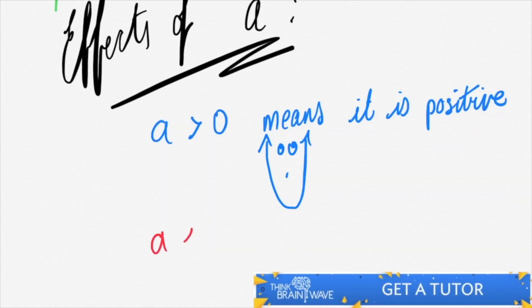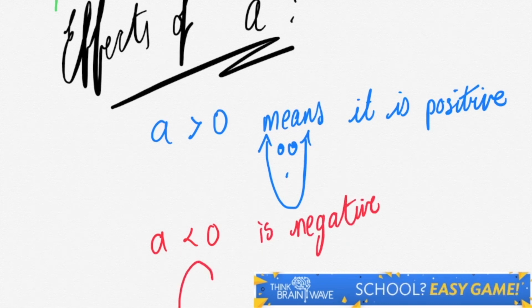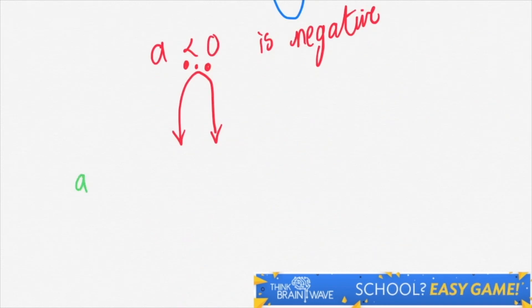If a is less than 0, meaning it's negative, it means that the graph is negative and is upside down. It's like a smile, but upside down.